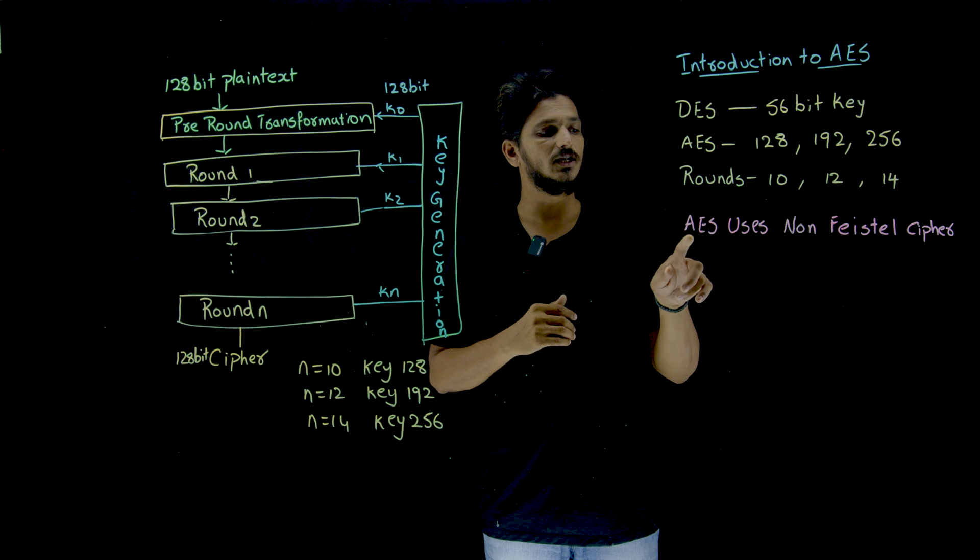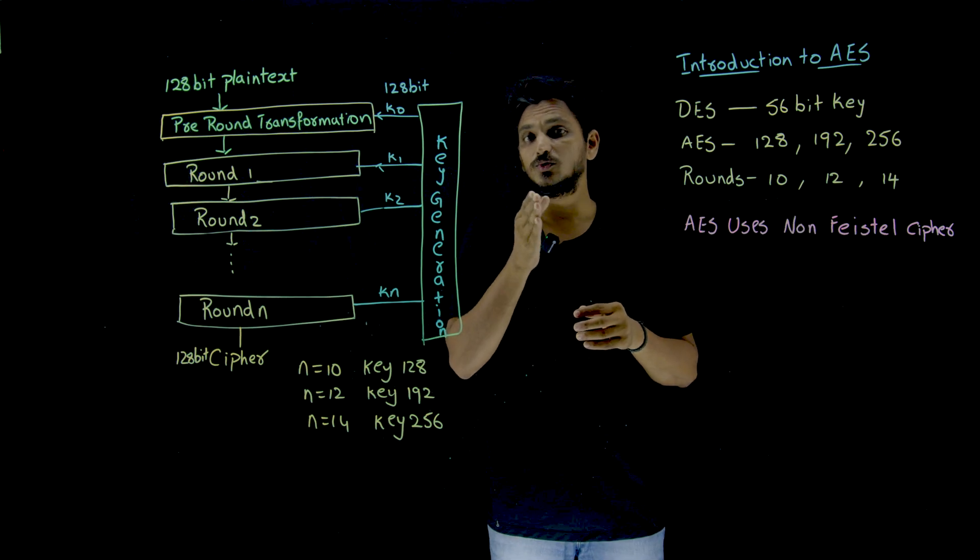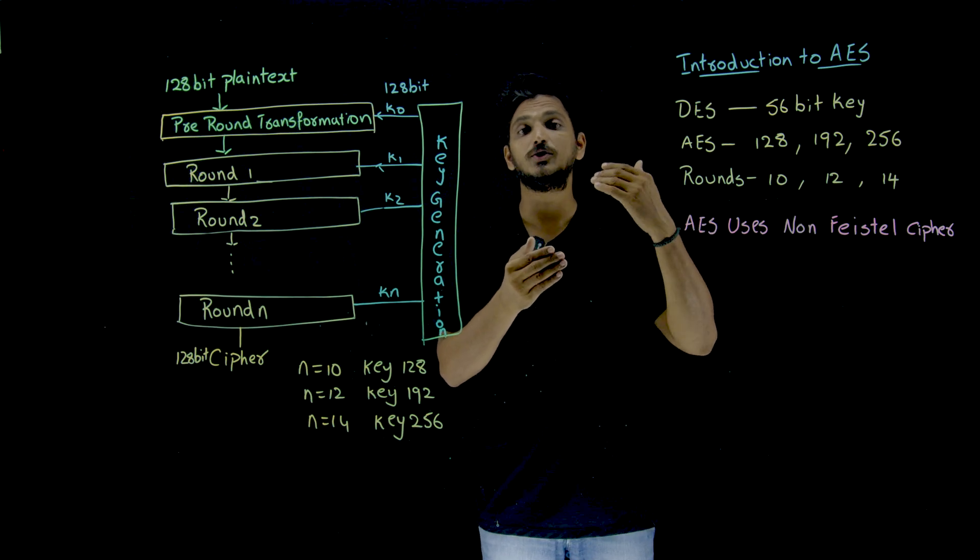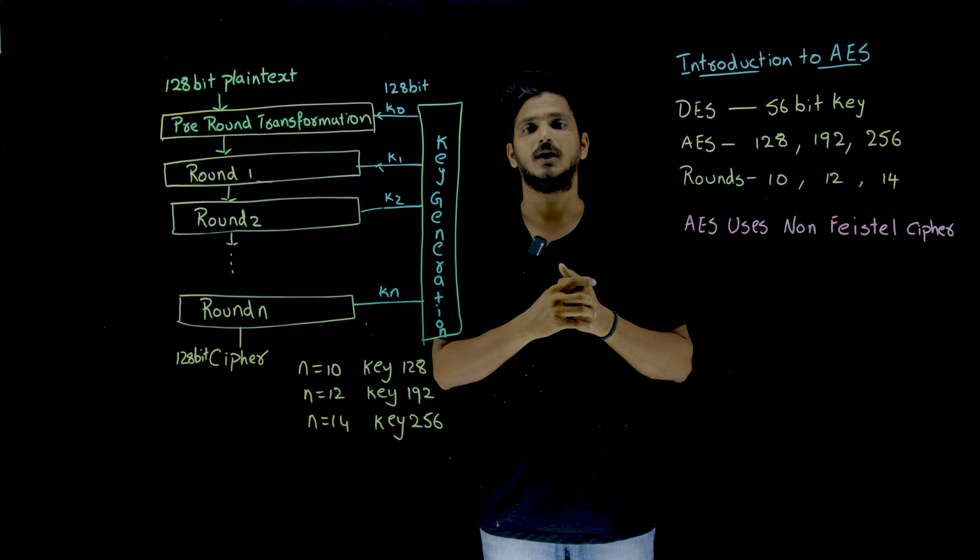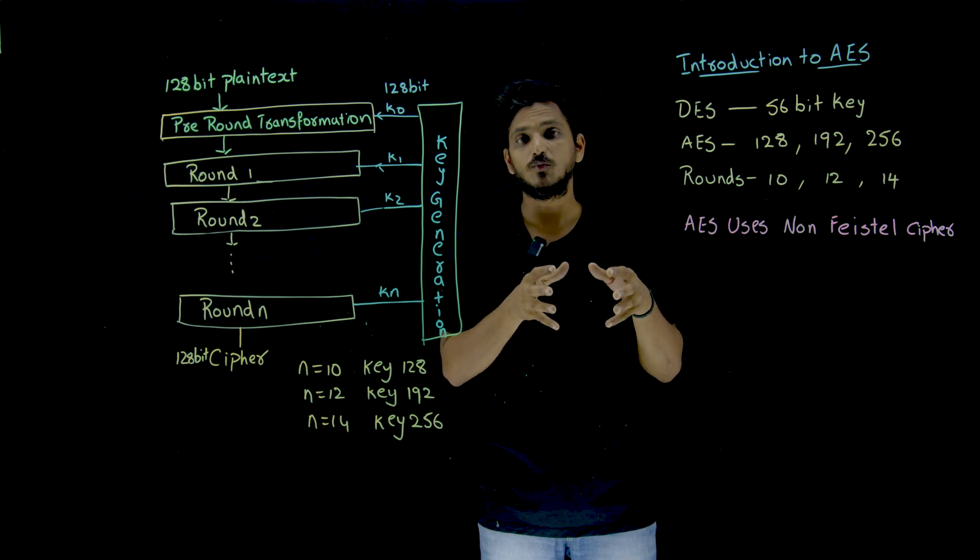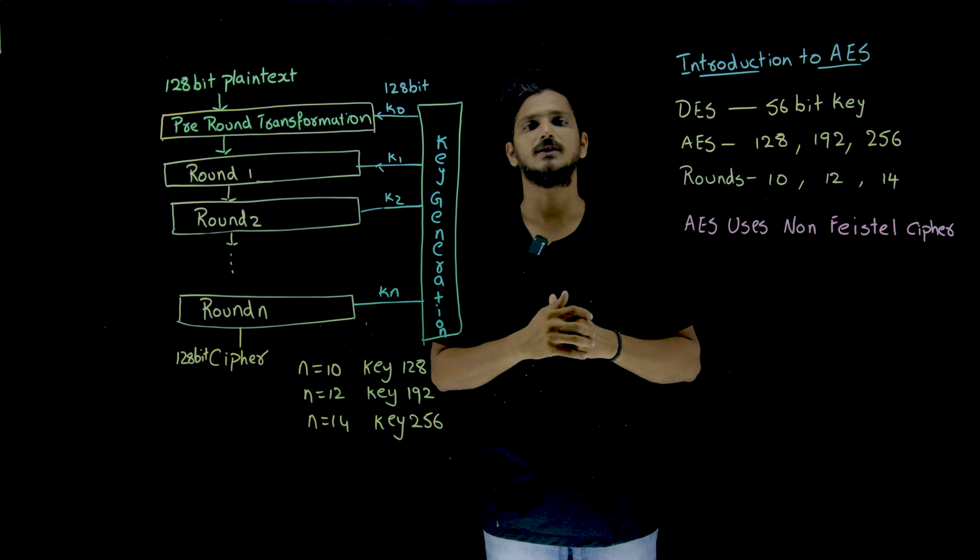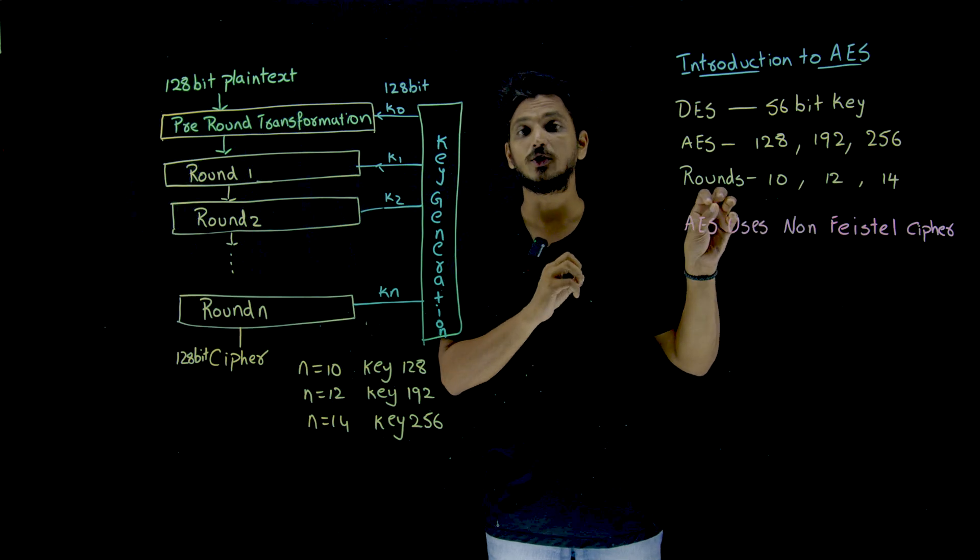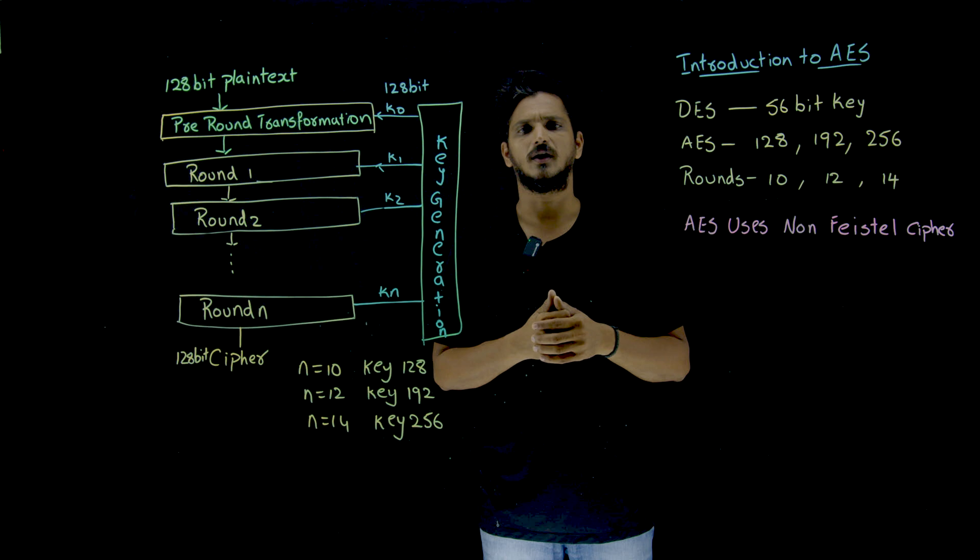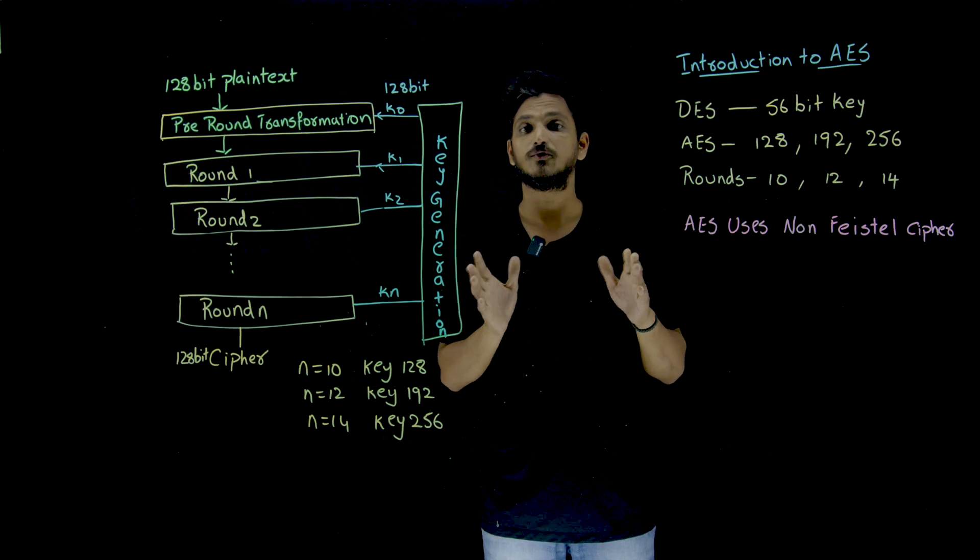And the next point you need to understand, AES is using non-Feistel cipher. DES is using Feistel cipher, means non-invertible components are used in Feistel cipher. Even though we are using non-invertible components, but still we can get the decryption. How that happens using the XOR operation, we discussed in DES. Here, it is going to use only non-Feistel ciphers, means invertible components are there. Everything is invertible component. We are not going to use non-invertible components.